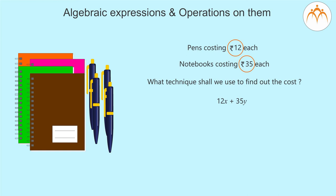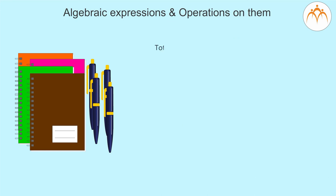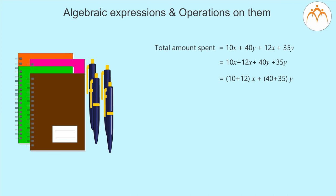The amount that we both spent = amount I spent + amount my sister spent = 10X + 40Y + 12X + 35Y. Since the number of pens and notebooks each of us bought are the same in quantity, we use the same variables X and Y in both formulas. We can rewrite this as 10X + 12X + 40Y + 35Y, or simplify further to (10 + 12)X + (40 + 35)Y. So the total amount we both spent = 22X + 75Y. Here we added the coefficients of the same variables only.